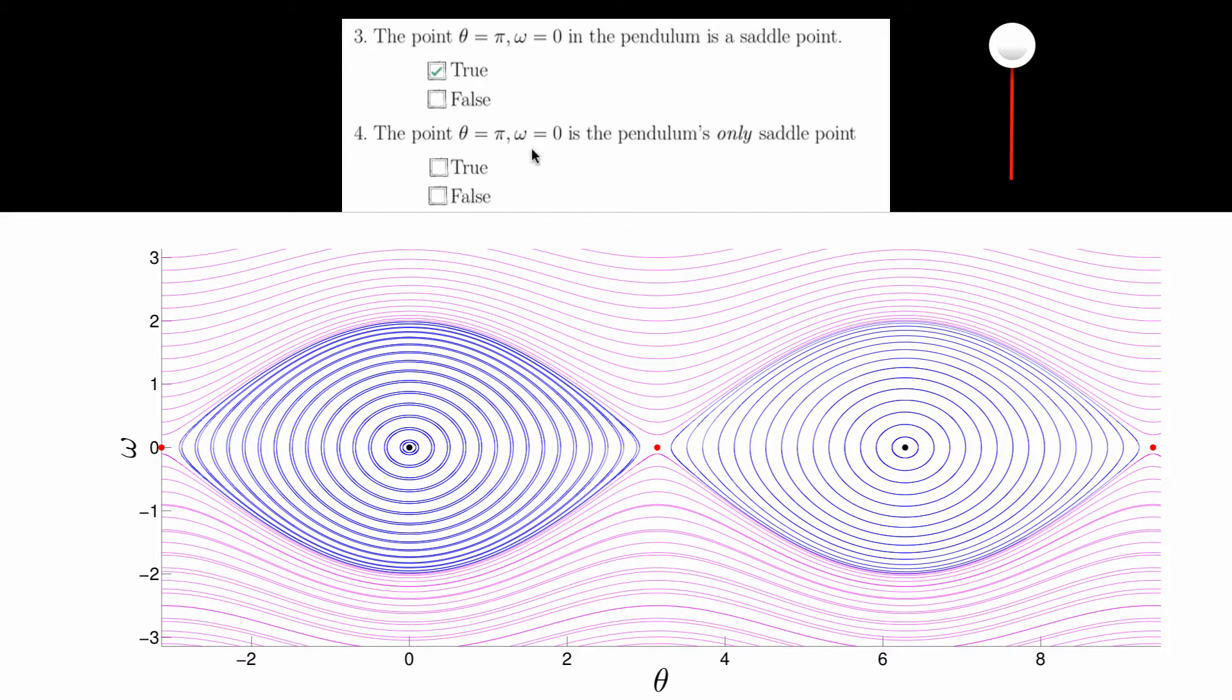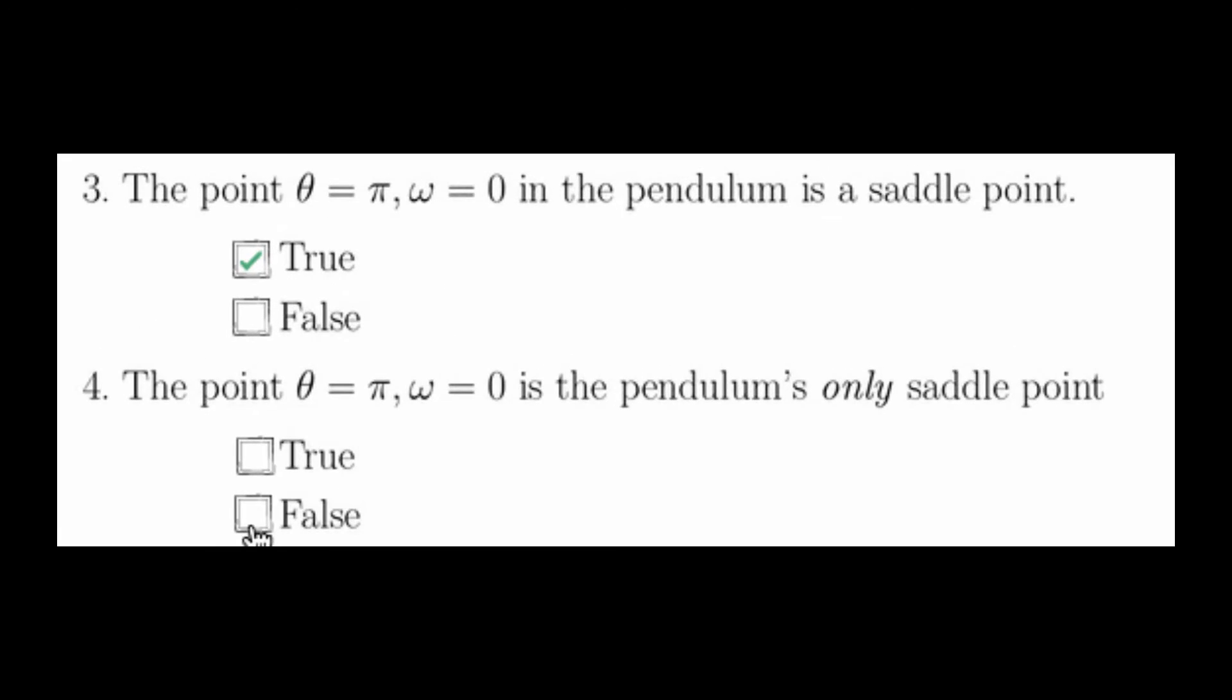The second question asks if this point is the only saddle point. As we showed in the solution for quiz 4.2, actually every odd multiple of pi is a saddle point of this dynamical system. For the damped or the undamped pendulum, this is true, and so the answer to this question is false.